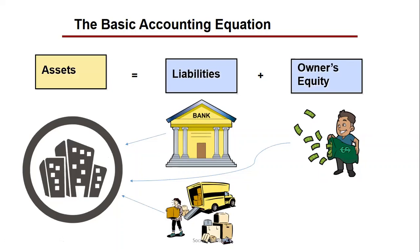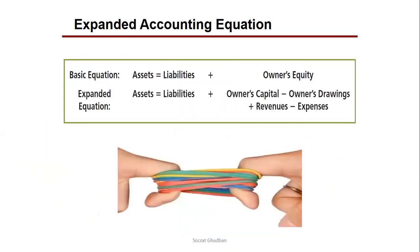We also have owner's equity, meaning the owners bring their money or capital and invest it in the company. This gives the company its assets: land, building, cash, supplies, and equipment. All these parties — banks, creditors, suppliers, and owners — expect to get their money back. For example, banks are paid back with interest, and owners earn profit.